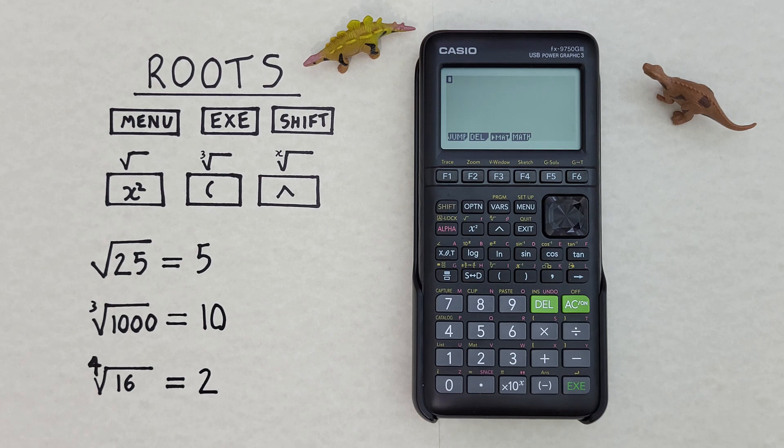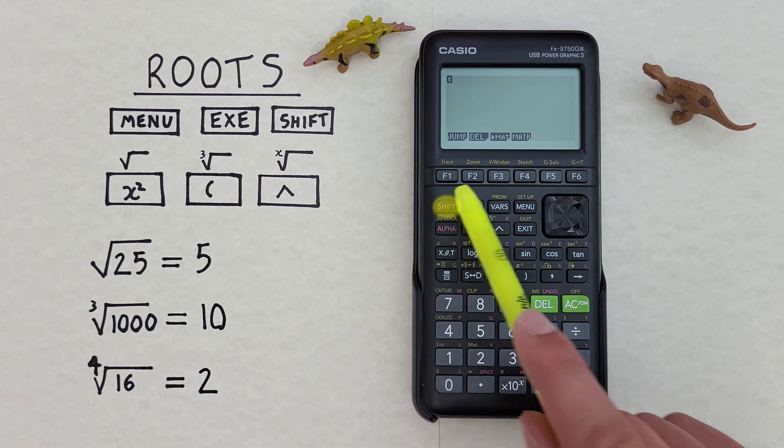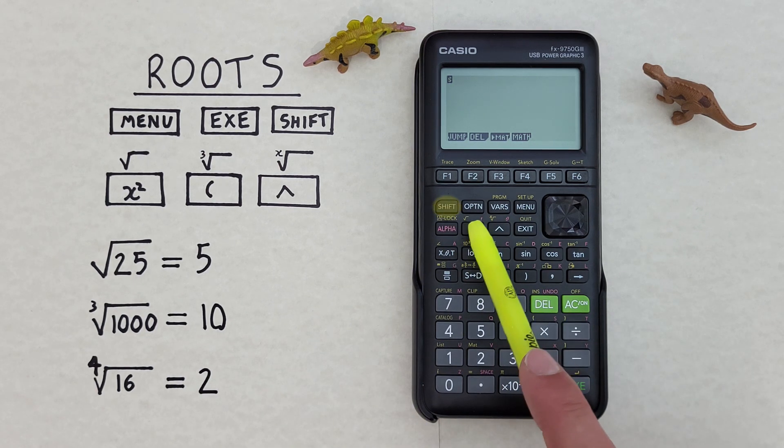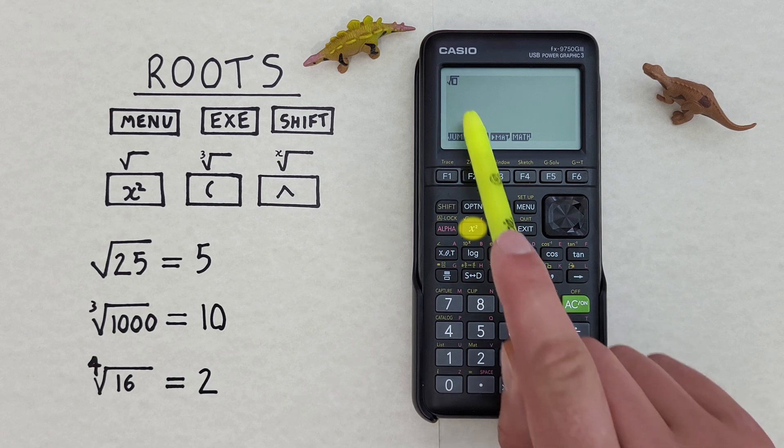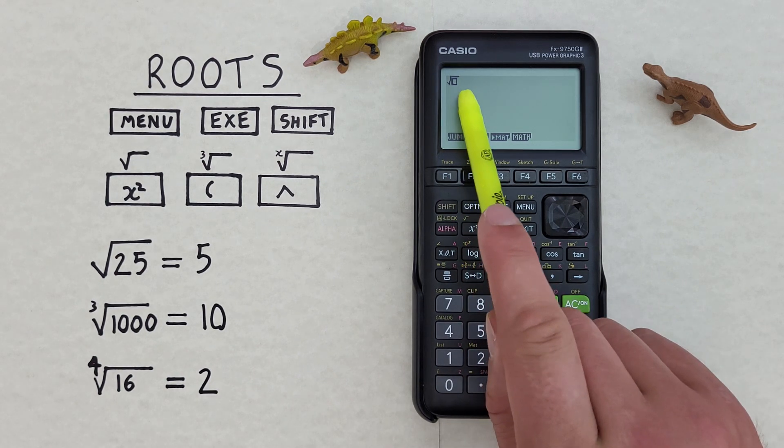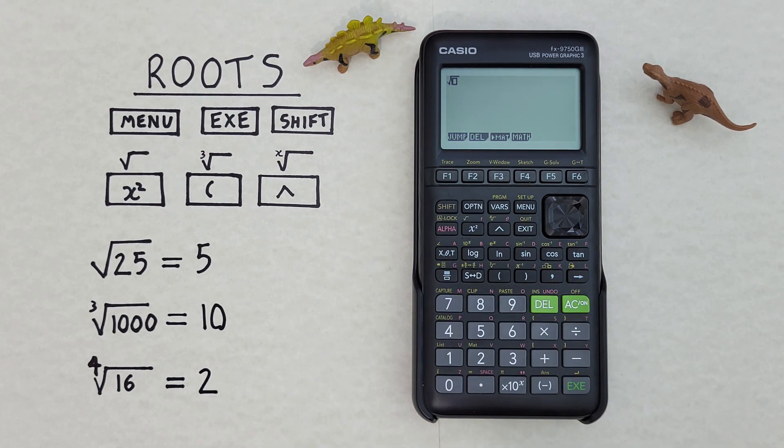Okay, now let's say we wanted to find the square root of 25. To do that, first we press shift and then the x squared key with the shift function of square root. And we get the square root symbol with a box underneath. Now we can enter the 25 in that box and press exe.